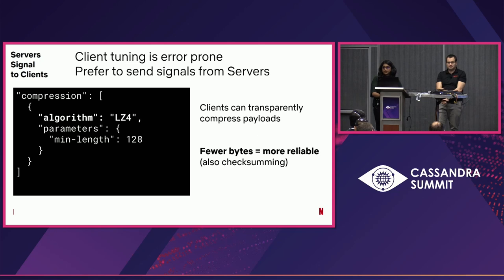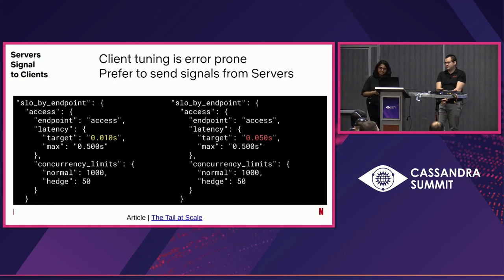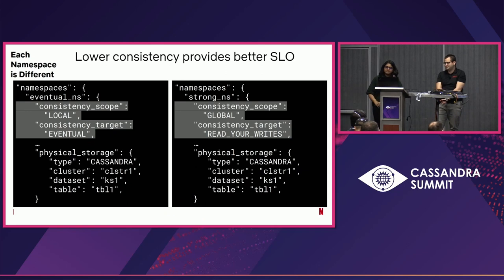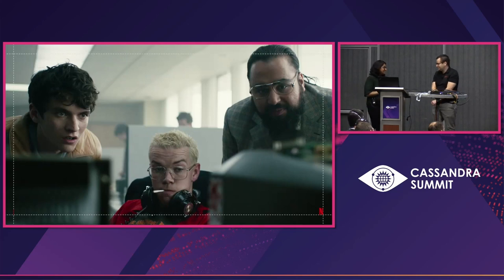We talked about SLOs a little bit earlier. Some clients need 10-second SLOs, some others need 50 seconds. For example, with a consistency scope of eventual, you can return data in 10 milliseconds, whereas with global consistency you go to 50 milliseconds. With all that, Joey will talk about APIs.